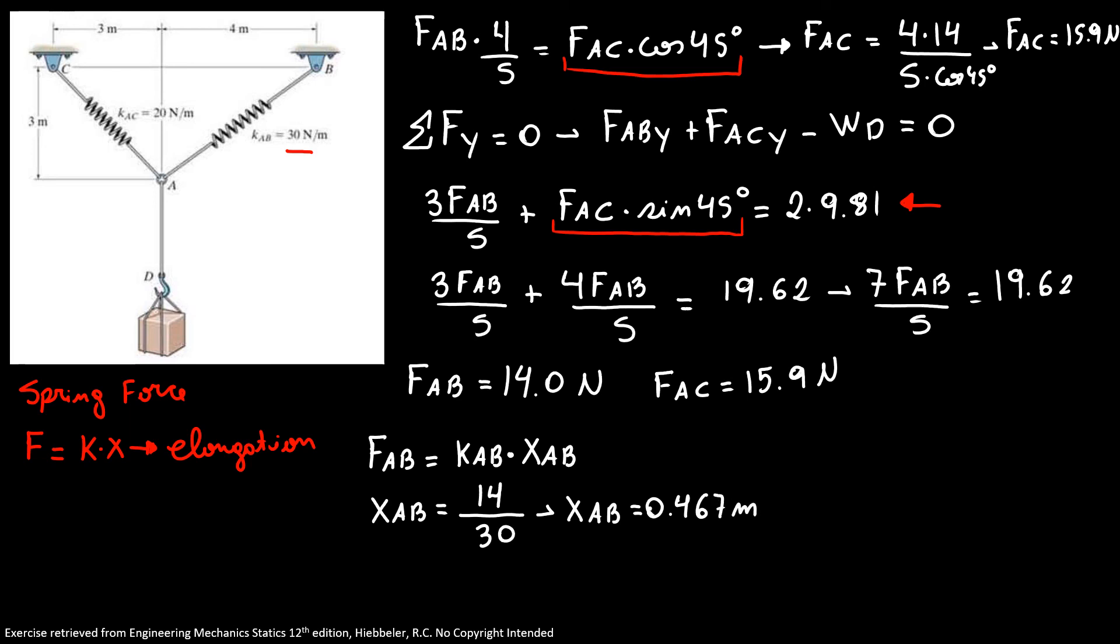Applying the same concept, FAC equals KAC times XAC. So I know my XAC equals 15.9 over 20. So my XAC equals 0.795 meters.